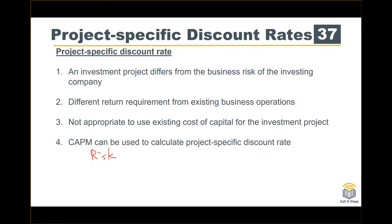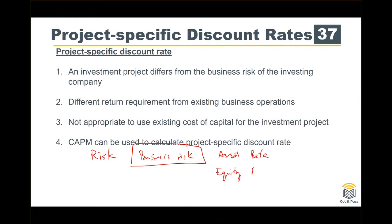We talked a lot about risk — specifically systematic risk — and we discussed business risk and financial risk. For asset beta, it represents business risk only. For equity beta, it considers both business risk plus financial risk. Applying CAPM is useful for estimating or calculating the project-specific discount rate.